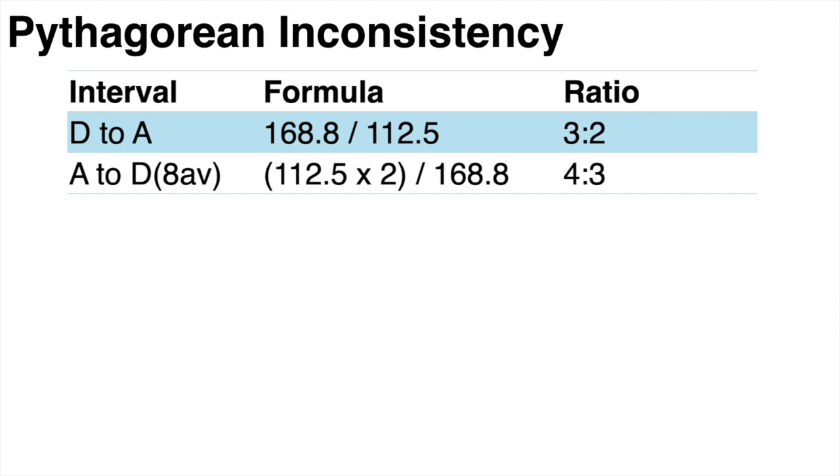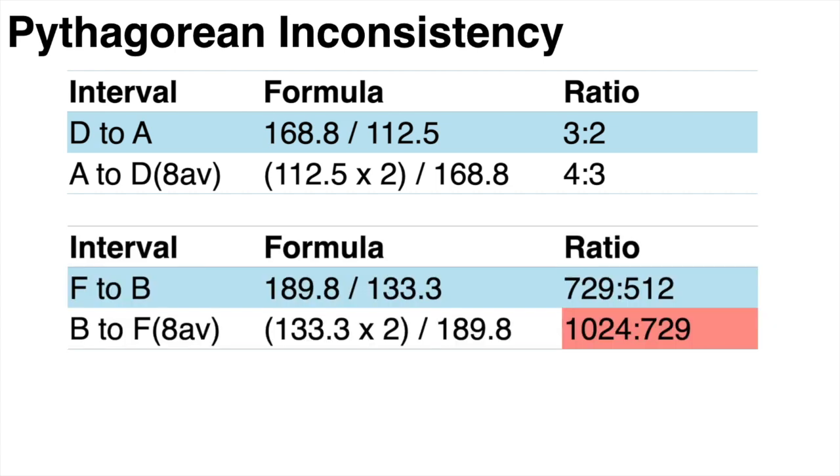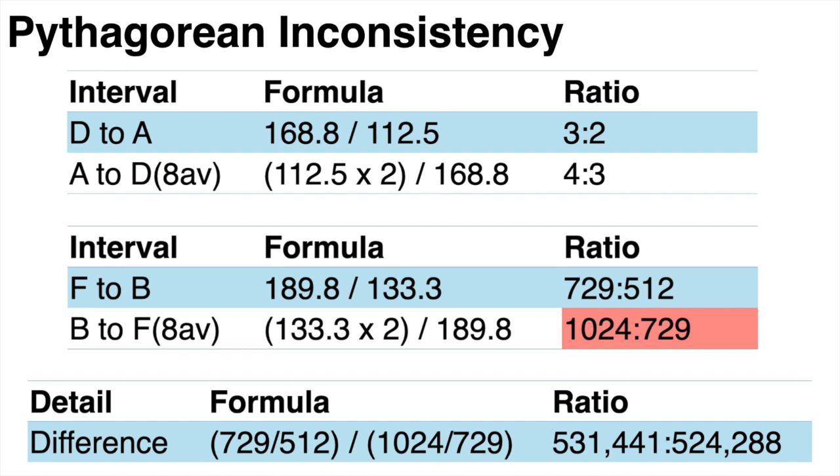But now let's try the same thing for the notes F and B. This is shown here. So notice that the interval ratio from F to B a tritone interval is different to the interval ratio from B to F an octave higher which is again also a tritone interval. So they're both the same interval. These are both tritone intervals but they have two different values. They have two different distances separating the notes. So we've ended up with two different tritone intervals. And so we've found an inconsistency. And as you may have guessed the difference between these two frequency ratios of these two different tritone intervals is the Pythagorean comma. And here it is again.